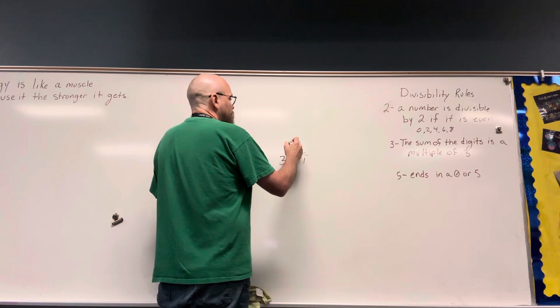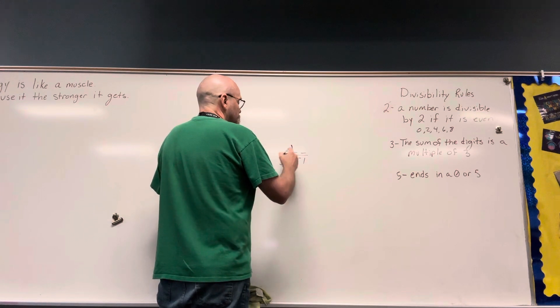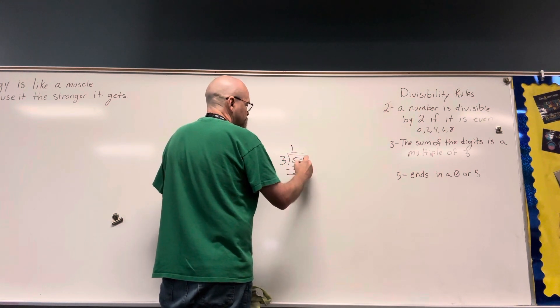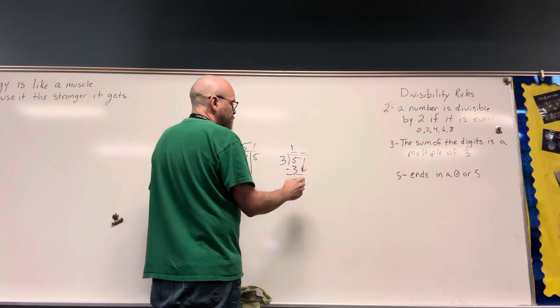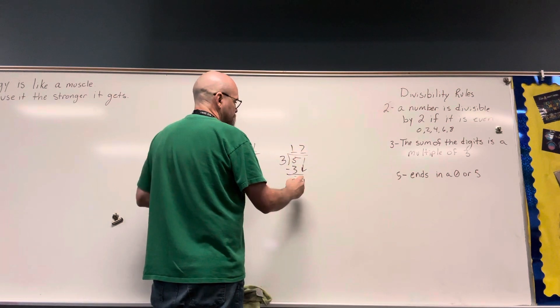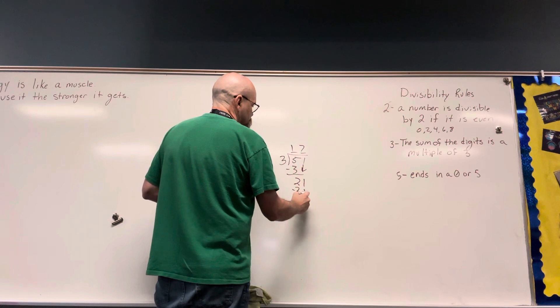3 goes into 5 one time. I subtract, I get 2, bring down the 1, 3 goes into 21 seven times, subtracting 0.